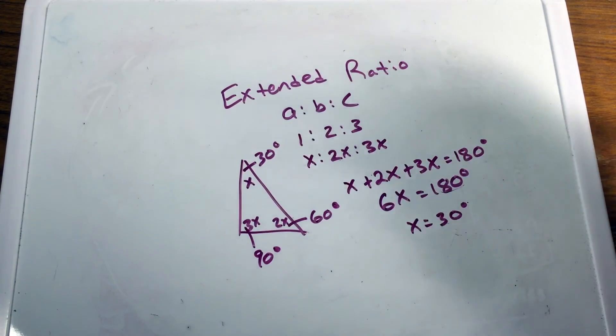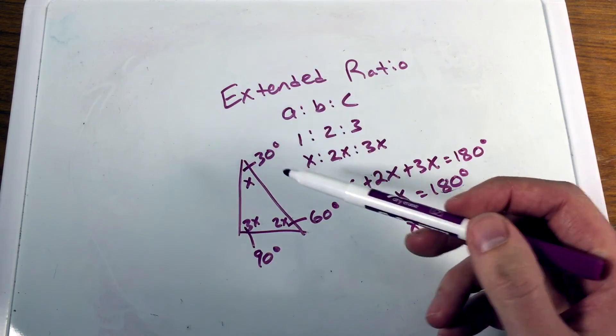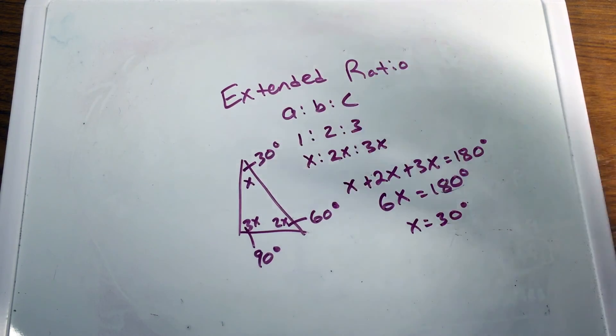And so our special triangle, a 30, 60, 90 triangle, has a ratio of its interior angles of a one to two to three extended ratio.